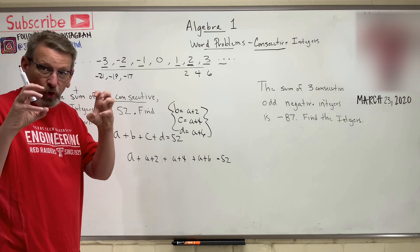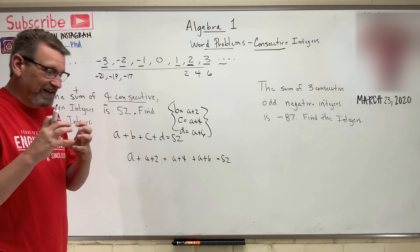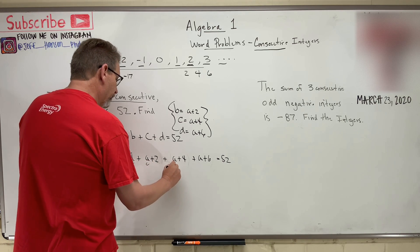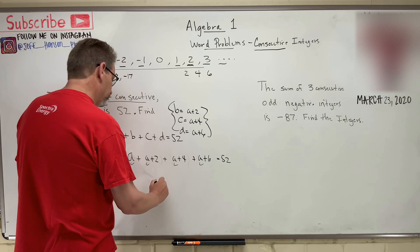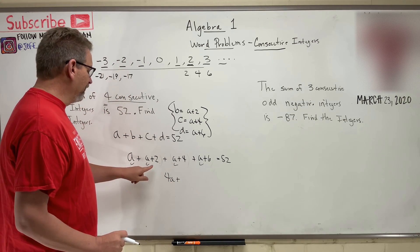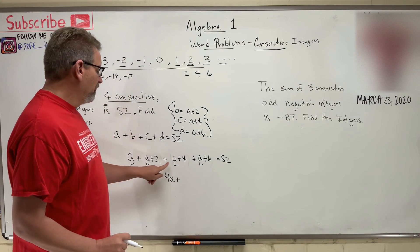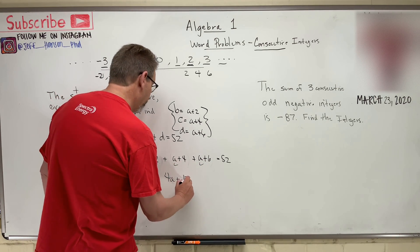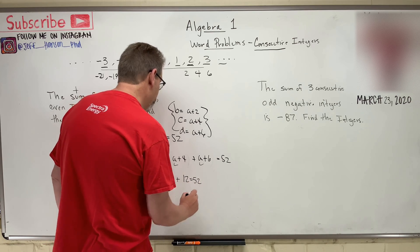Okay, let's group things, okay? Let's group the A's together. How many do we have? One plus two, one, two, three, four of them. So four A plus, now let's group the integers together. Two plus four is six, and six plus six is 12, is equal to 52, okay?